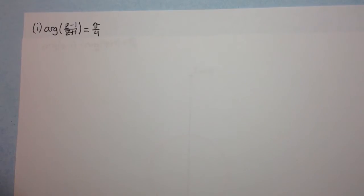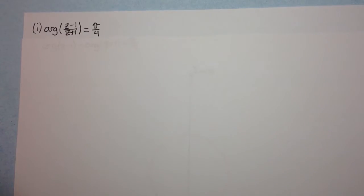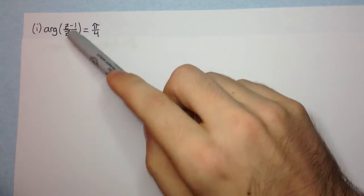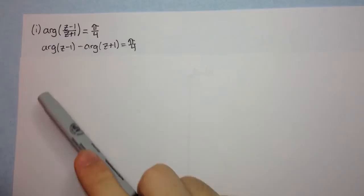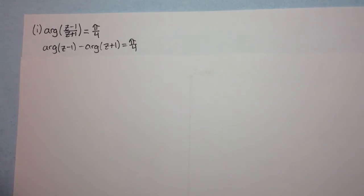We're looking at the argument of z minus 1 over z plus 1 equal to pi on 4. This isn't quite in the standard form that we saw in the video where we went through the understanding of the locuses of these standard forms, but we can change this quite easily so that it matches a standard form. We recognize that the argument of a quotient is equal to the difference of the arguments, so we can rewrite it in this way.